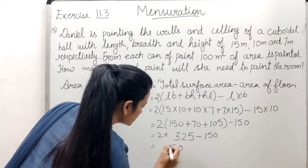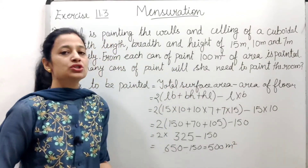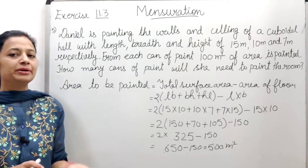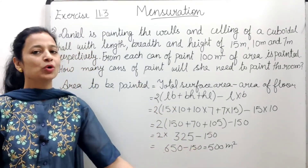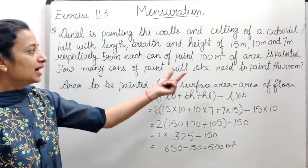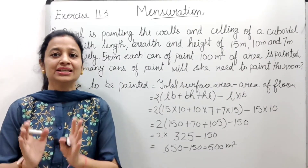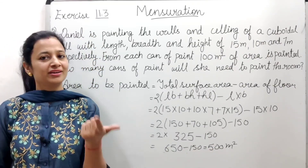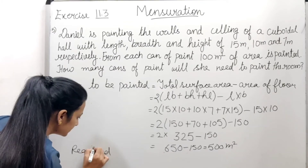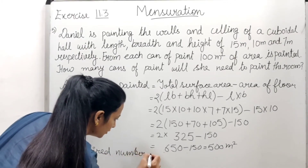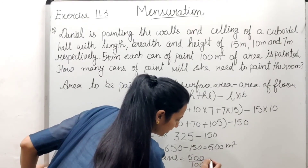Calculating: 2 × 325 minus 150 = 650 minus 150 = 500 square meters. So the area to be painted is 500 square meters. Now, since one can of paint covers 100 square meters, the required number of cans = 500 ÷ 100 = 5 cans.